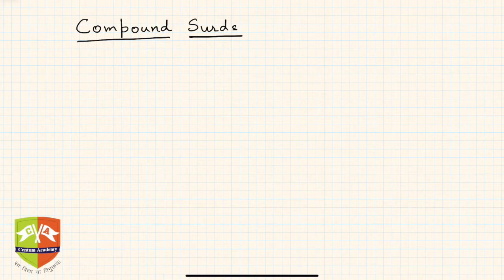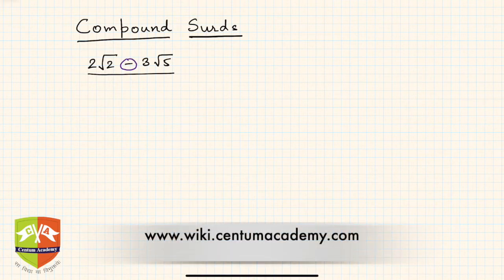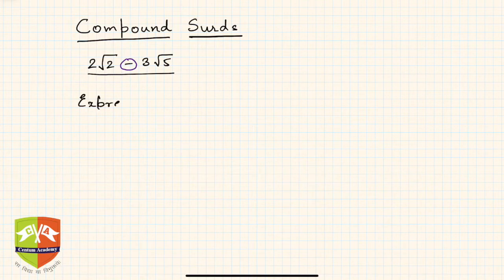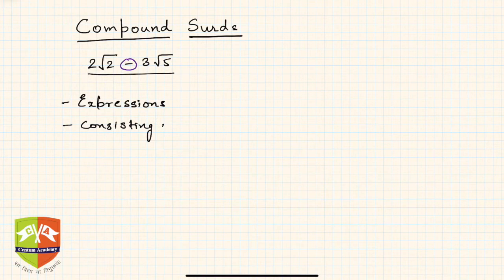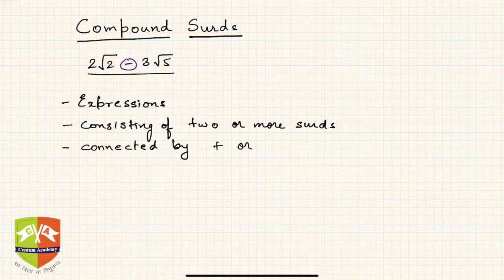Welcome friends to another session on surds. In this session we are going to understand what are compound surds. You would have encountered surds like 2√2 minus 3√5 — this is not a single surd, it is a combination of two surds separated by a negative sign. Compound surds are expressions consisting of two or more surds connected by either plus or minus signs.